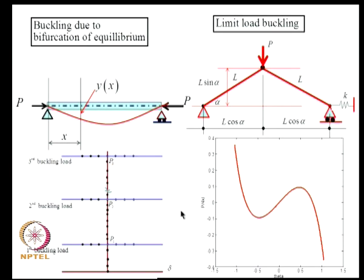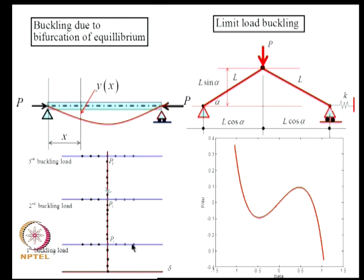Based on these axioms, we analyzed a few problems using simple systems to bring out the central ideas. We considered the beam-column problem where, for small values of P, Y equal to zero is the equilibrium position. As P is increased, a neighboring equilibrium position becomes possible — this is buckling due to bifurcation of equilibrium. The load-deflection path has infinitely many buckling loads and the lowest one is of fundamental interest. When P reaches the first critical load, the zero position becomes unstable and two new branches emerge.